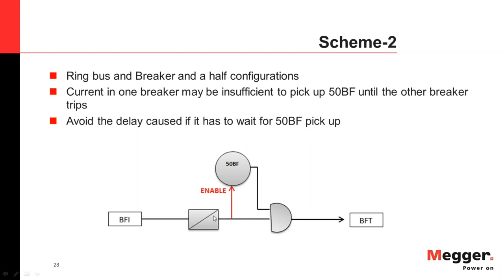The BFI Seal-In Scheme is required when you have high-speed relays whose trip contact resets very quickly. If the trip contact resets momentarily, the BFI will briefly disappear, potentially causing the relay to incorrectly declare no Breaker Failure. With the seal-in scheme, the BFI is latched so that a Breaker Failure Trip can still be correctly issued.